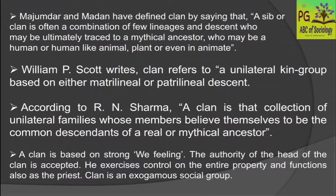Majumdar and Madan have defined clan by saying that a sib or clan is often a combination of a few lineages, and descent may ultimately be traced to a mythical ancestor who may be a human, human-like animal, plant, or even an inanimate object. The mythical ancestor is someone you just imagine in a myth — for example, some say they descended from a mountain, a plant, a leaf, or a feather. In lineage, the ancestor is a living person, but in clan, the ancestors are mythical.